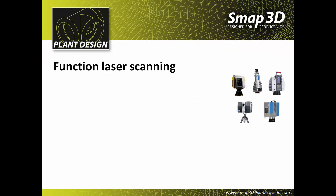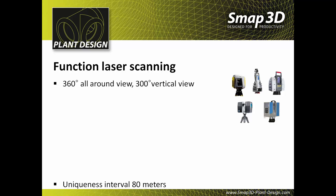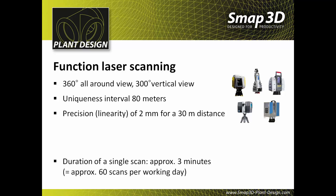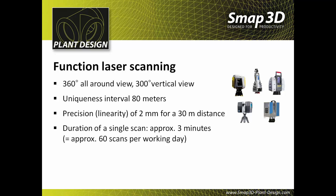The underlying laser scanners used for this purpose nowadays offer the following features: an all-around visibility of 360 degrees with vertical visibility of 300 degrees, an ambiguity interval of 80 meters, and a linear precision of 2 millimeters at a distance of 30 meters.